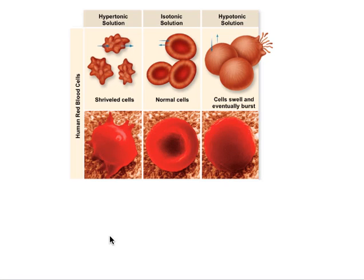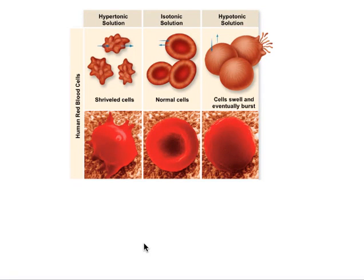When we place red blood cells in a hypertonic solution — a solution with a higher concentration of solutes than what the cell has inside — water will move out of the cell. It will leave the cell and, as a result, the cells will shrivel. Normal red blood cells circulating in plasma are in an isotonic solution relative to the red blood cells, so they maintain balance and keep their shape because the plasma has the same concentration of solutes as inside the cells.